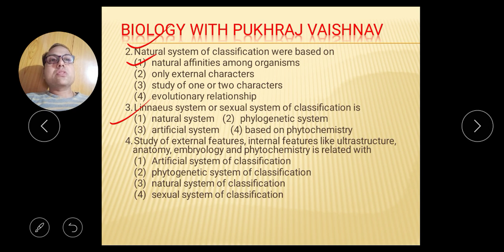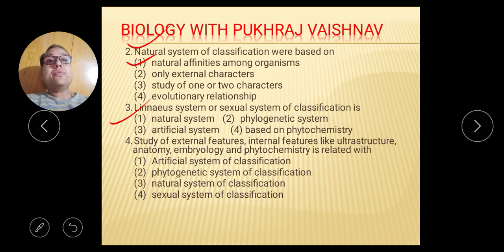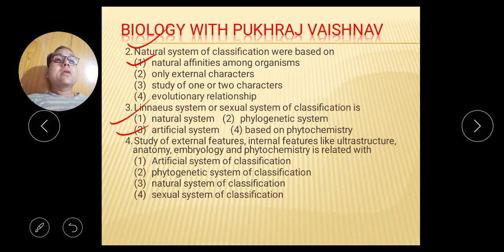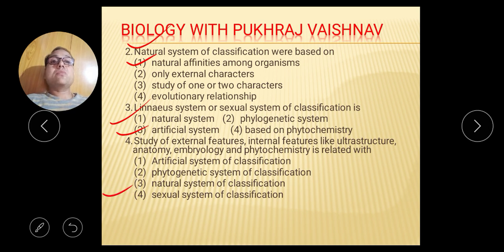Third question: Linear system or sexual system of classification — Linnaeus gave the artificial system, so the right answer is artificial system. Question 4: Study of external features, internal features like ultrastructure, anatomy, and phytochemistry is related to — since there is an internal feature included here, this is the natural system of classification.